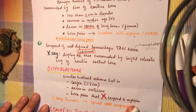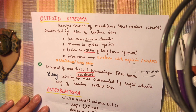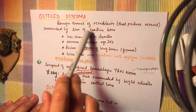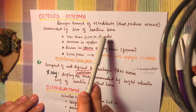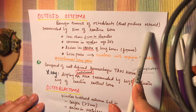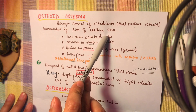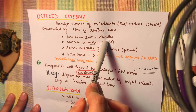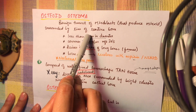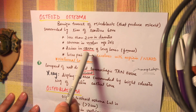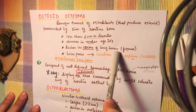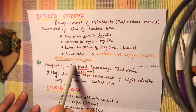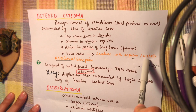Bone-forming benign tumors include osteoid osteoma and osteoblastoma. Osteoid osteoma is a benign tumor of osteoblasts that produce osteoid, surrounded by a rim of reactive bone, and is less than 2 cm in diameter. It is common in males in their 20s and arises in the cortex of long bones, especially the femur. The important symptom is nocturnal bone pain that is relieved by aspirin or NSAIDs.